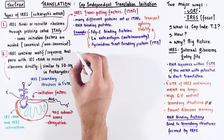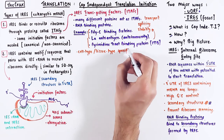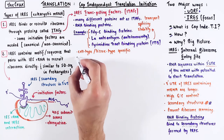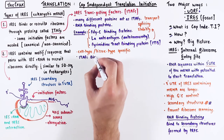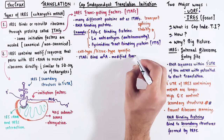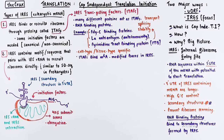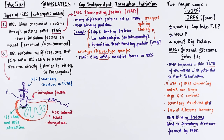These proteins can be either cell-type specific or even tissue-type specific. Additionally, these ITEFs have the potential to bind modified bases that may be present in the internal ribosome entry sequences. One such base is the m6A that we discussed in the RNA processing and modification video, which is also linked down in the description.